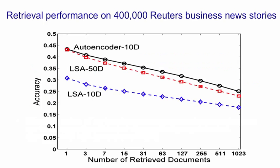Here's the accuracy of retrieval as a function of the number of retrieved documents. You'll see that an autoencoder using a code with just 10 real numbers is doing better than latent semantic analysis using 50 real numbers, and of course it's five times less work per document after you've got the code. Latent semantic analysis with 10 real numbers is much worse.